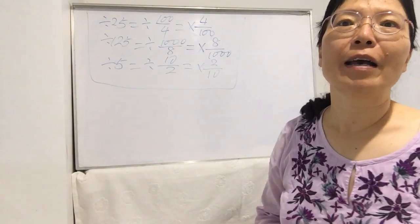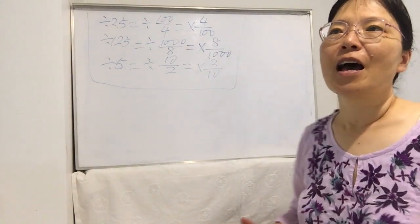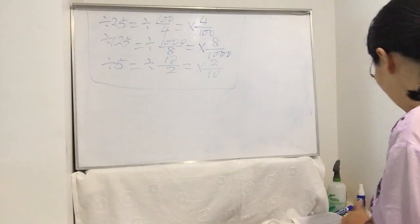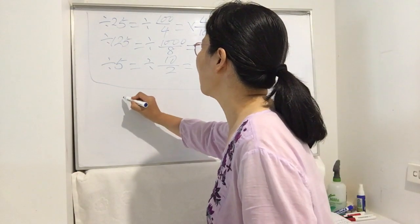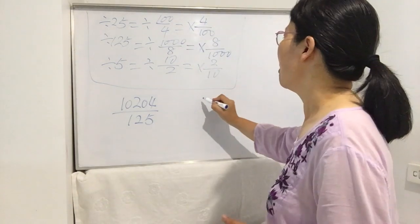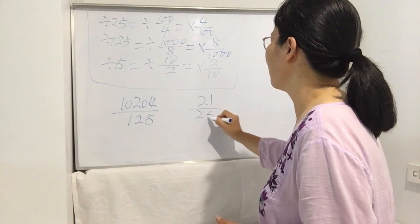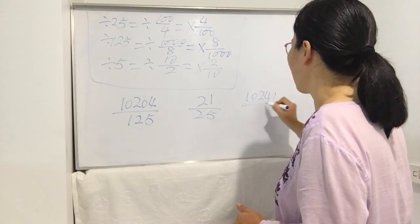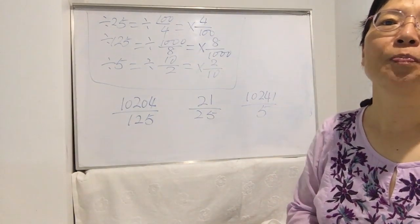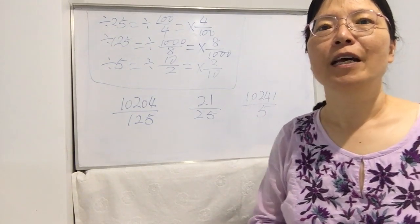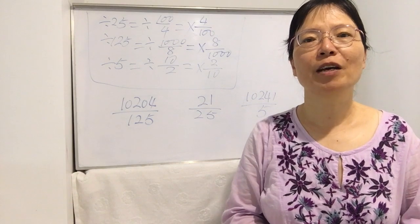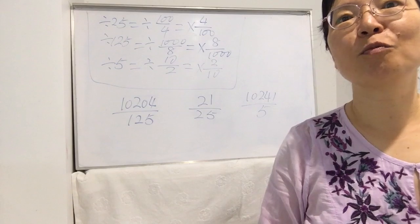Every skill you master comes after practice — practice makes perfect. Here are some exercises for you: 12004 divided by 125, 21 divided by 25, and 10241 divided by 5. Practice using these special techniques on these three topics. If this video was useful, please share it with your friends, and thank you for watching. Hope to see you next time — don't forget to subscribe! Bye-bye!